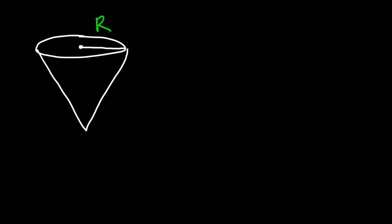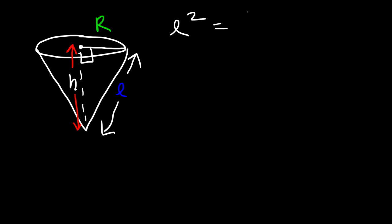Here we have a cone — r is the radius, h is the height, and l is the slant height. These three form a right triangle, so to find the slant height you use the equation l² = r² + h², which comes from the Pythagorean theorem: c² = a² + b². That's the equation that relates r, h, and l together.